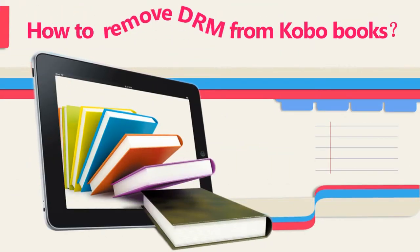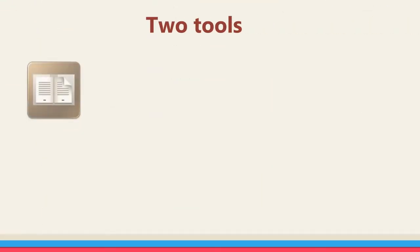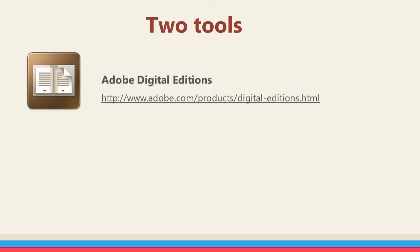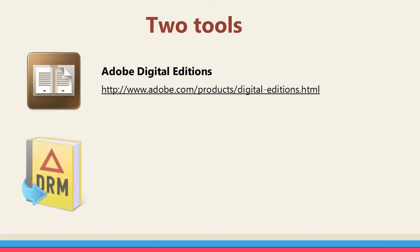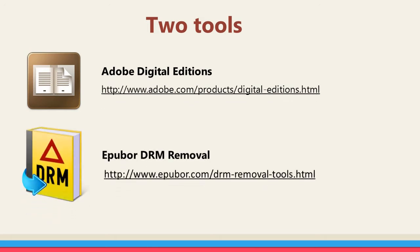How to remove DRM from Kobo Books. Here are the tools we will need: Adobe Digital Editions, ePubber DRM Removal. Download and install the two programs on your computer before the decryption.